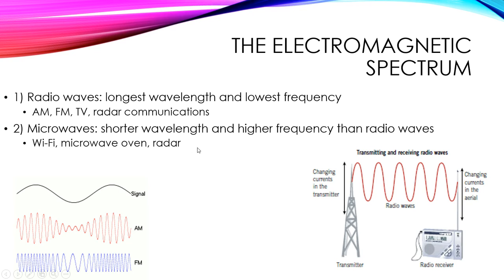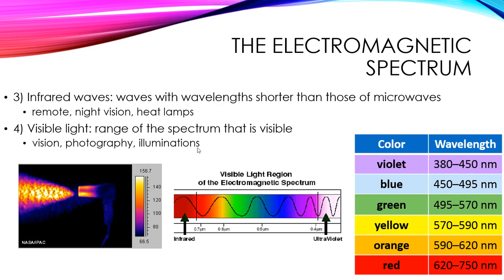As we move through the spectrum the wavelength gets shorter and frequency gets higher. Microwaves have shorter wavelengths and are used in Wi-Fi, microwave ovens for cooking, and radar. Next is infrared — you've probably seen night vision images showing heat. Infrared is used in TV remotes, heat lamps in restaurants, and the red light bulbs used to raise baby chicks.